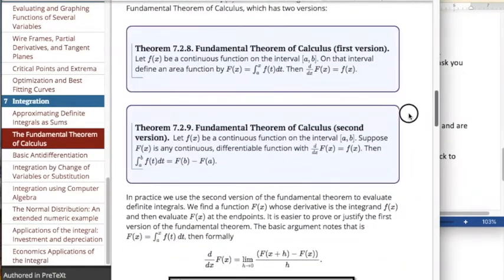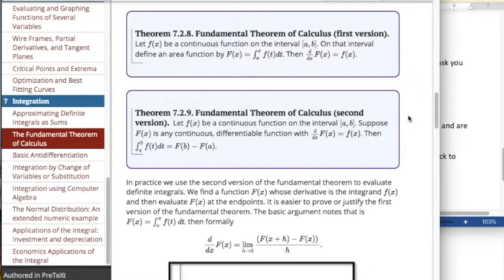Last time we looked at the fundamental theorem of calculus and there are two versions. The first version says that the area function has as its derivative the original function. What we're more interested in is the second version of the fundamental theorem of calculus that says if I have a function f and an antiderivative,